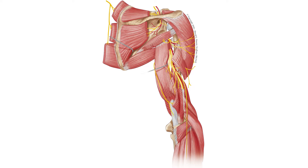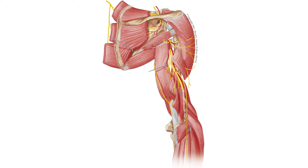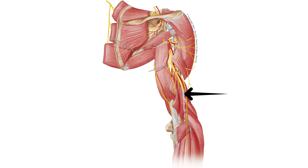The nerve lies within the radial sulcus, also known as the radial groove, which runs in a spiral course from proximal medial to distal lateral around the humerus. The sulcus separates the origins of the lateral and the medial head of the triceps brachii muscle. The radial nerve crosses the lateral intermuscular septum, just distally to the middle of the humerus, to pass to the anterior side of the upper arm.